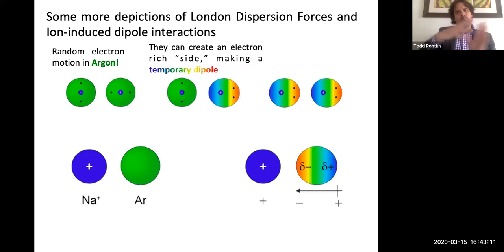So when they're more on one side, that creates an electron rich side and an electron poor side, therefore making what's a temporary dipole. It's temporary because it's not going to last. Electrons are still moving around.